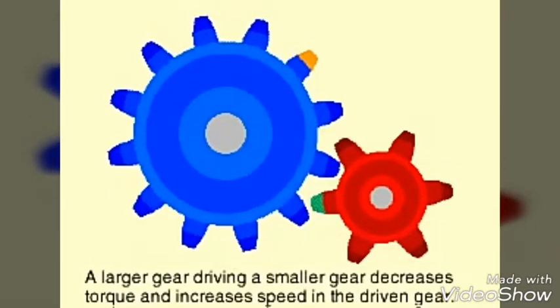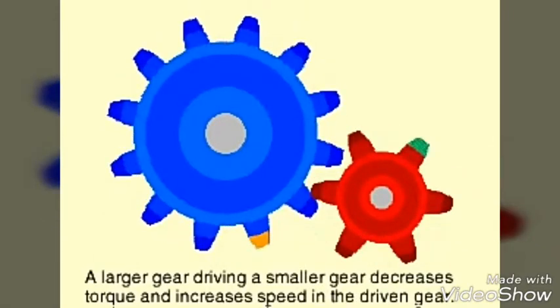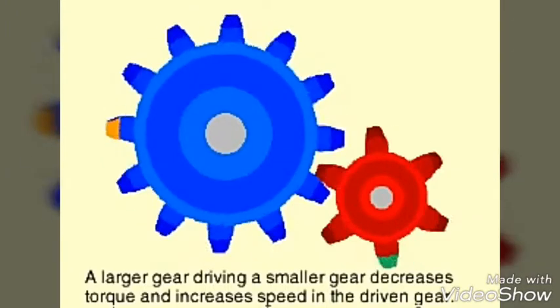While in a reverse example, a large gear will decrease the torque and increase the speed of a small gear.